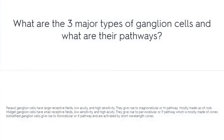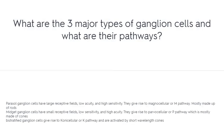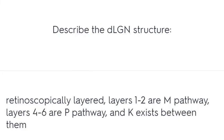What are the three major types of ganglion cells and their pathways? Describe the DLGN structure: it is retinotopically layered. Layers 1 to 2 are the M pathway, layers 4 to 6 are the P pathway, and the K pathway exists between them.